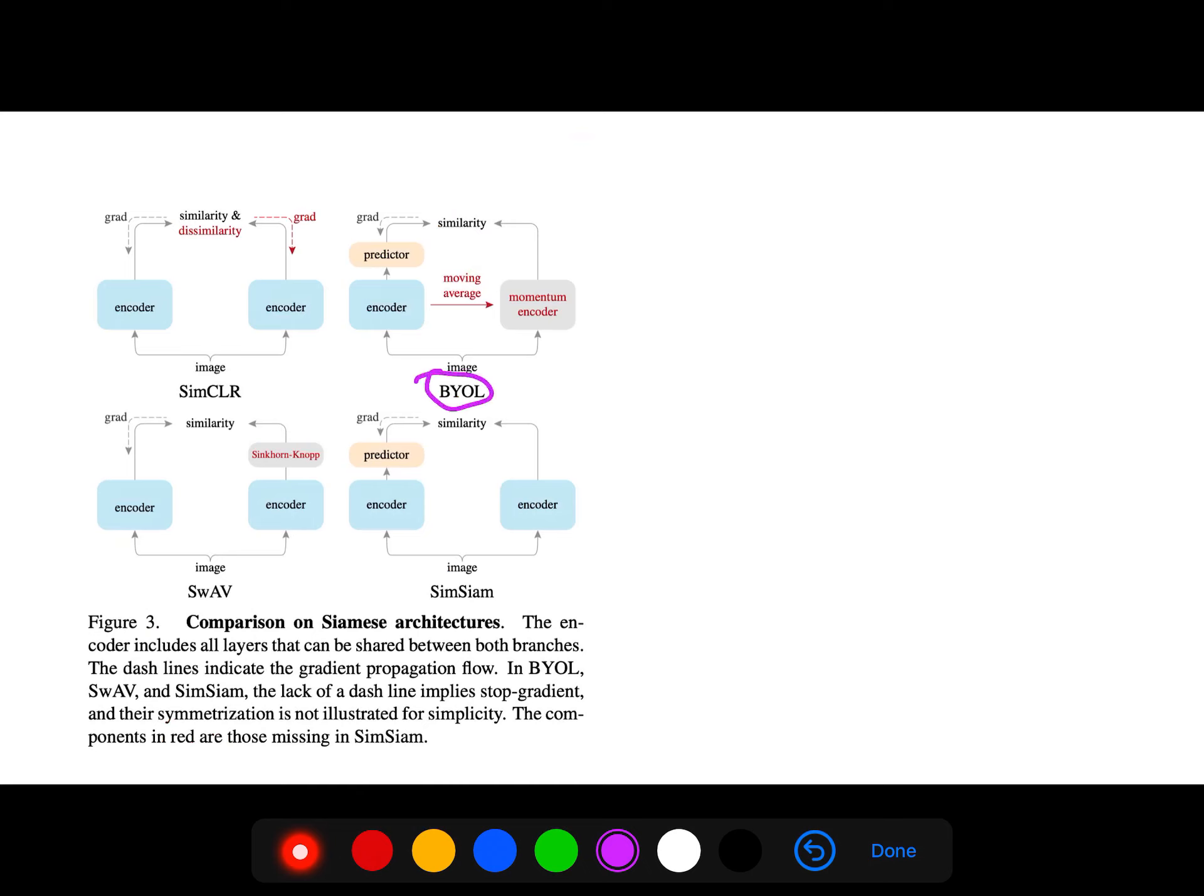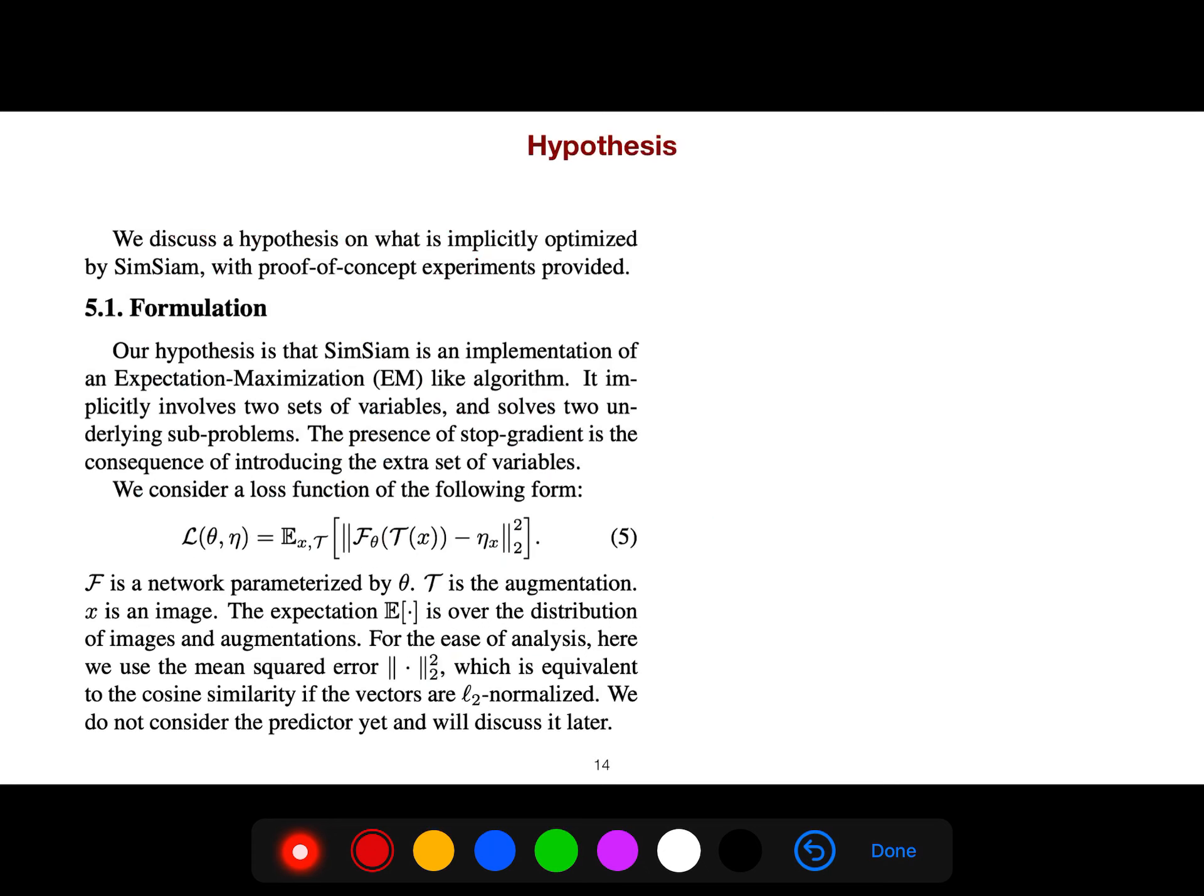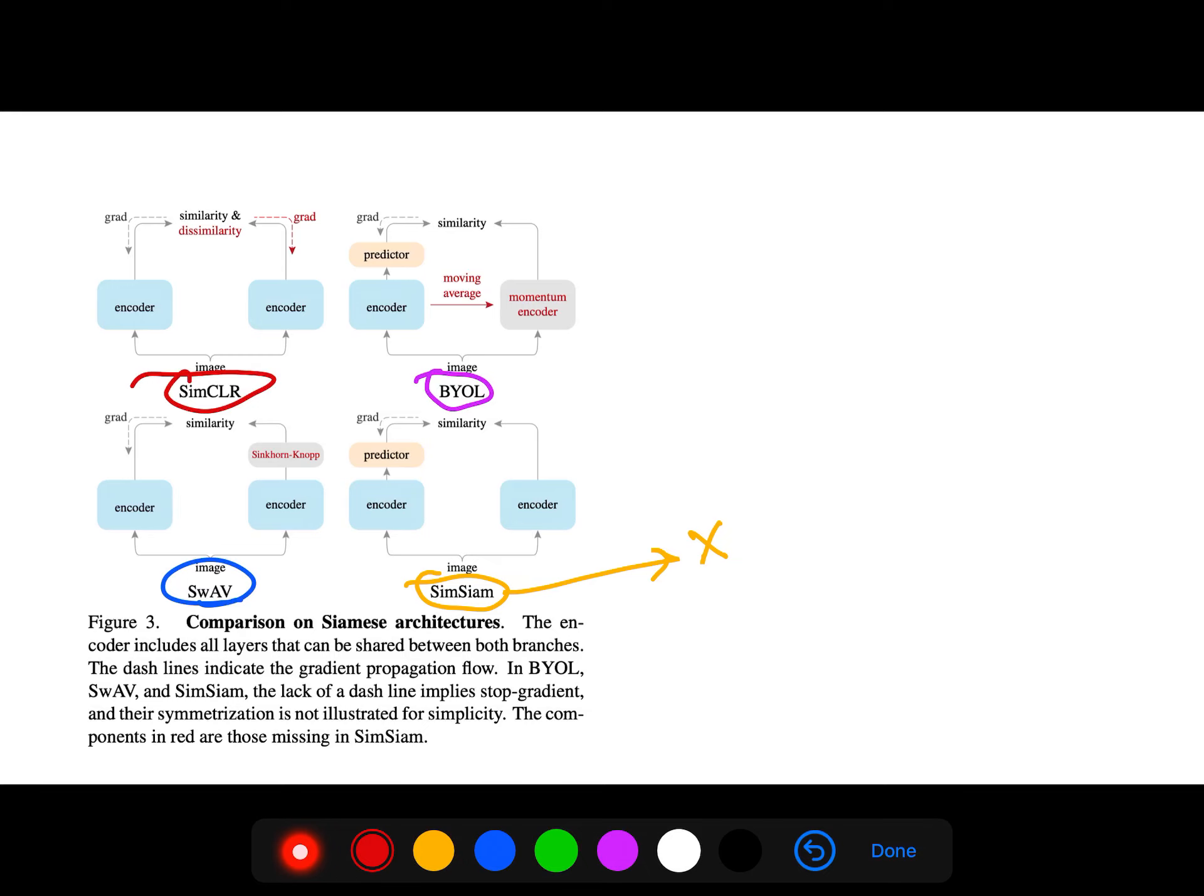I've explained BYOL in a different video. Today I've talked about SimSiam. As I said, there is another paper that shows that this one fails if the model is too simple. In another video I explained SwAV. And everybody knows SimCLR, the classic version, one of the first approaches. So even in SimCLR, we have gradient in both directions. But in BYOL, we don't have backpropagation for this part. And for SwAV, it uses a Sinkhorn-Knopp approach.